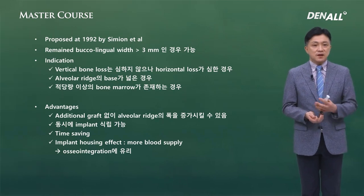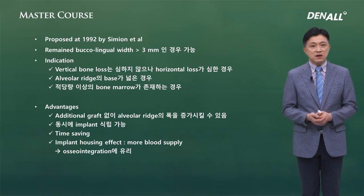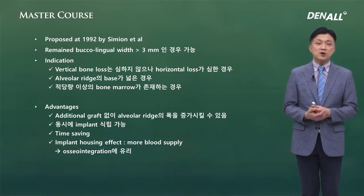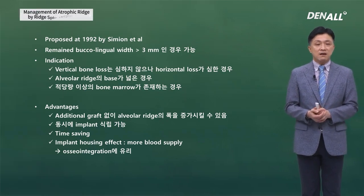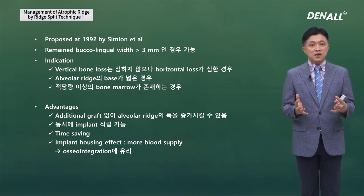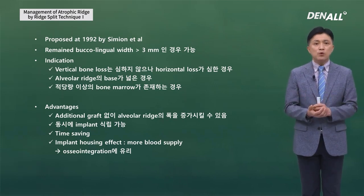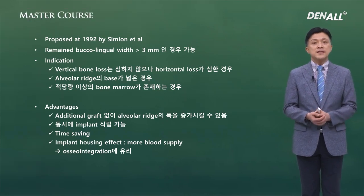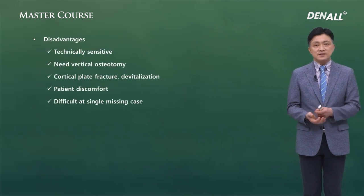The benefit of ridge split is that without additional graft, the alveolar ridge width can be increased, implants can be placed, and time can be saved. The implant housing effect means the implant is surrounded by bone, providing more blood supply and leading to accelerated regeneration. The disadvantage is that it is technically sensitive.